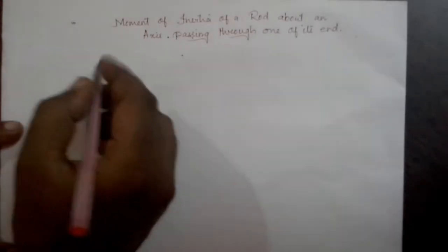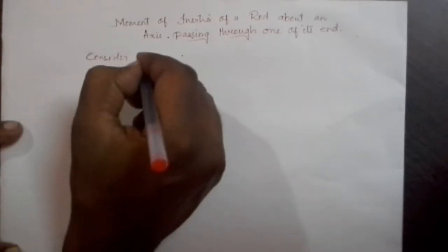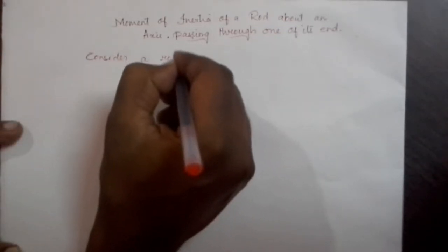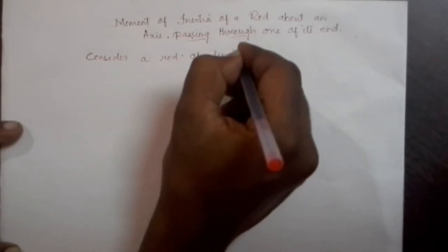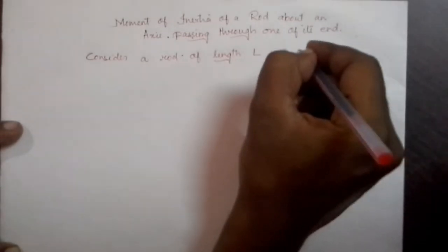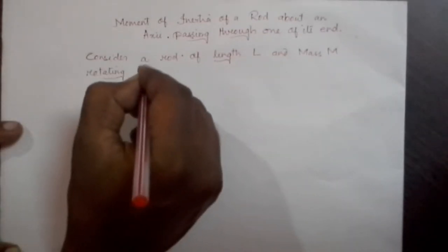Hello everyone. My name is Titus and today we are going to derive expression for moment of inertia of a rod about an axis passing through one of its end. So consider a rod of length L and mass M rotating about an axis passing through one of its ends.